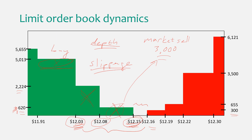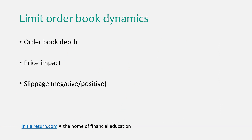Let's summarize Part 2. We discussed order book depth and price impact, both related to liquidity. We also talked about slippage, which can have either a negative or positive impact on your transaction's net outcome. That's all for this video — I hope you found it useful. If so, please consider liking the video and subscribing to our channel. Looking forward to seeing you in another video, thank you very much.